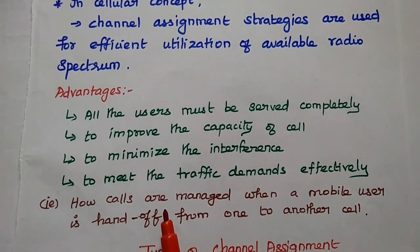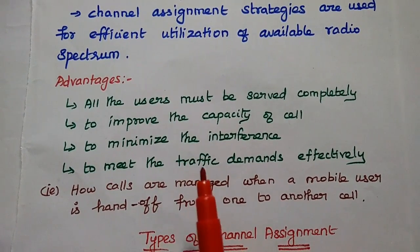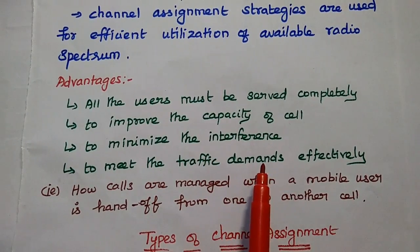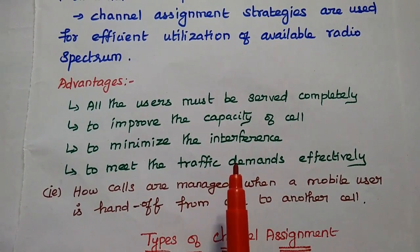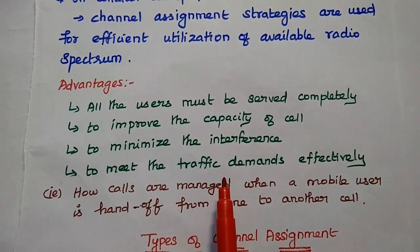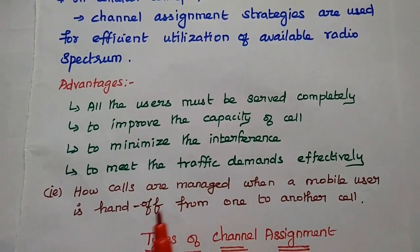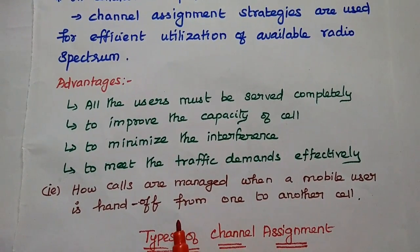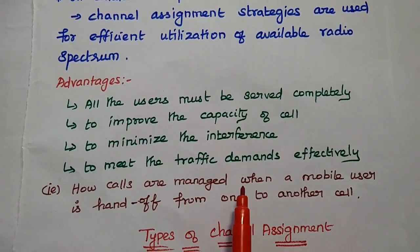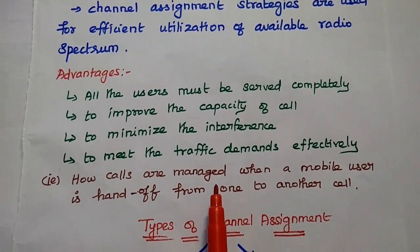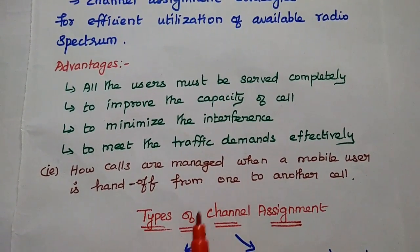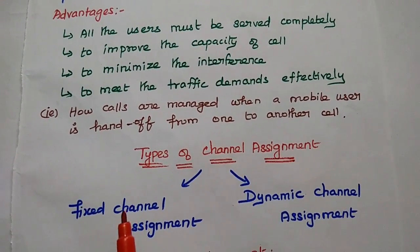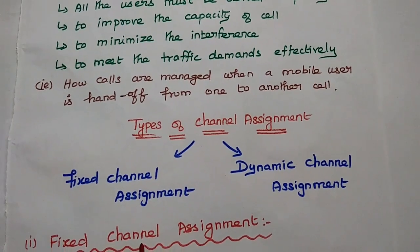Channel assignment is mainly used to meet the traffic demands effectively. Traffic demand in the sense: when the mobile user is moving from one cell to another cell, how the cells are managed to hand over the signal from one cell to another cell is decided by this channel assignment. So, it is very important to meet the traffic demands effectively in the mobile communication process.